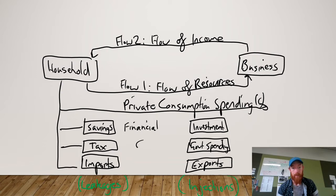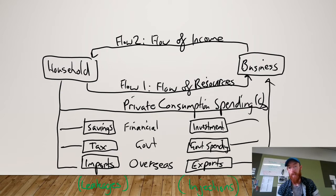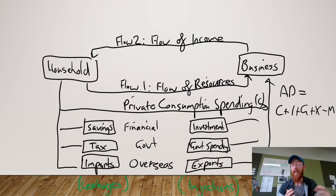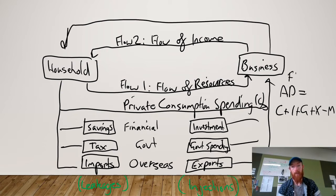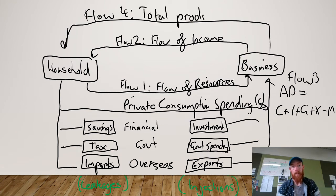We've got the government sector and the overseas sector. When we add all these things together — C plus I plus G plus X minus M — that equals aggregate demand. Aggregate demand is the total level of spending in the whole economy, or the total level of expenditure. It gives businesses an overall indication of how much demand there is for goods and services, leading to flow three — aggregate demand — and then flow four, which is total production, also known as aggregate supply or total GDP.